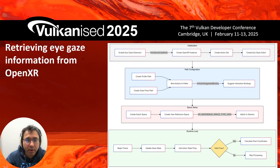In this slide we will look at how to retrieve eye gaze information from OpenXR. I've used a flowchart rather than code, since it's easier to understand than verbose API calls — and OpenXR and Vulkan are both pretty verbose APIs. In this flowchart, we first check if the eye gaze extension is available using XR instance create info. This is similar to how we check for extensions in Vulkan, and we do it during the bootstrapping phase.